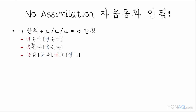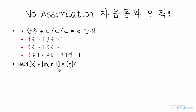We said that ㄱ 받침 is the same as ㄱ, and since ㅁ, ㄴ, and ㄹ are the same as the phonemes M, N, and L — can we apply the above Korean rule of assimilation to English? The answer is No. This rule of consonant assimilation does not apply to English.